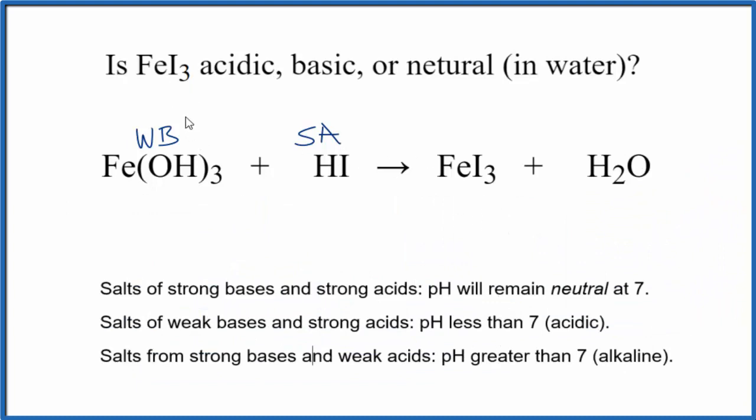Weak base and strong acid. Here's a weak base, strong acid. The pH will be less than 7, so this is going to be acidic. So the answer to our question: when FeI3 is dissolved in water, the solution that results is going to be acidic. The pH is going to be less than 7.